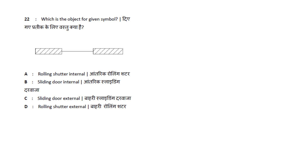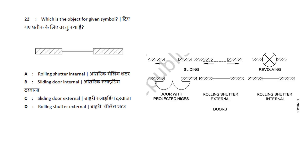This is the sign of structure — the image and color of the title. In the main area, the sliding door, revolving door, door with projected hinge, and the rolling shutter — external rolling shutter — are shown. If this symbol is denoted, the rolling shutter is external, and the answer is option D. The figure and symbol in the main area are the same.